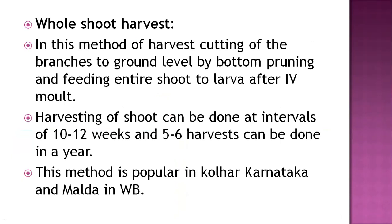The whole shoot harvest method involves cutting the mulberry plant from ground level — the entire shoot is cut and provided to fourth instar larvae for feeding. Harvesting can be done at intervals of 10 to 12 weeks, and five to six harvests can be done in a year. This ensures a continuous supply of leaves for the rearing room. This method is very popular in parts of Karnataka and in Malda, West Bengal.